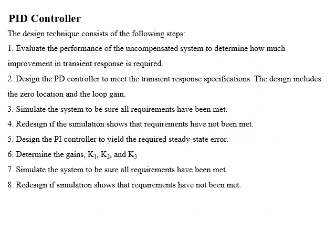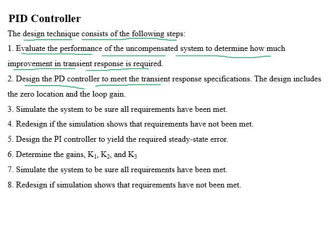The design of a PID controller consists of the following steps. First, evaluate the performance of the uncompensated system to determine how much improvement in the transient response is required. Next, design a PD controller to meet the transient response specifications, including placing the location of the zero and the open-loop gain. Simulate the result to verify all requirements have been met, and redesign if required. Then design a PI controller for zero steady-state error.